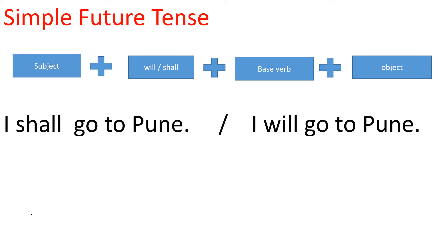In simple future tense, let's again revise the structure: subject plus will or shall plus base verb plus object. Some model examples are here. Try to understand simple future tense in Marathi — Saadha bhavishya kaad. The action that will happen in the future.